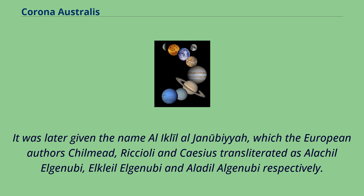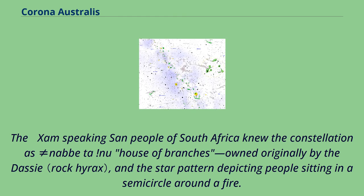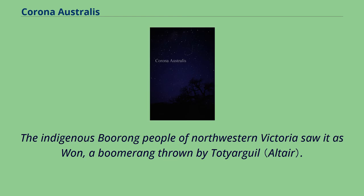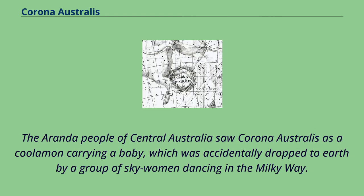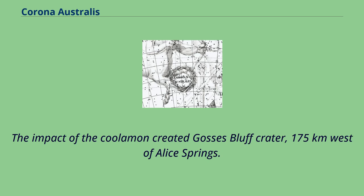The Somme-speaking San people of South Africa knew the constellation as ≠Nabata, meaning a house of branches owned originally by the Dossi, with the star pattern depicting people sitting in a semicircle around a fire. The indigenous Burrung people of northwestern Victoria saw it as a boomerang thrown by Toad Yargil. The Aranda people of central Australia saw Corona Australis as a Kuluman carrying a baby, which was accidentally dropped to Earth by a group of sky women dancing in the Milky Way. The impact of the Kuluman created Gosses Bluff Crater, 175 kilometers west of Alice Springs.